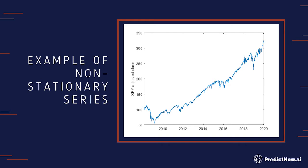What that means is it's unreasonable to use the SPY price as a feature, because in some part of the data it is around 100 and in some other part it's about 300. We are never going to go back to 100. In the future, hopefully we'll never see 100 anymore. So this is useless as a feature because we will never see those prices from back in 2009, hopefully.